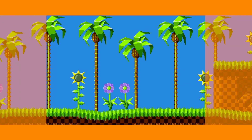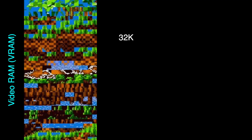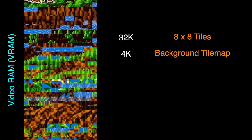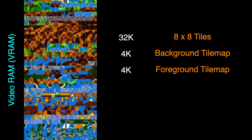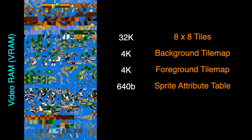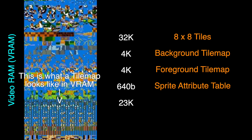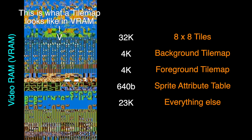Going back to the 64K of video RAM, for a typical game you may use 32K for all the different 8x8 tiles needed to create all your backgrounds, 4K for your background tile map, 4K for your foreground tile map, 640 bytes for the sprite attribute table, which also has to be in video RAM, leaving around 23K for use on things like sprites and fonts.